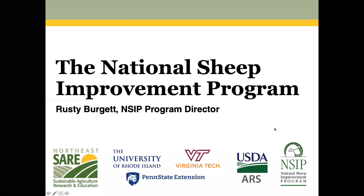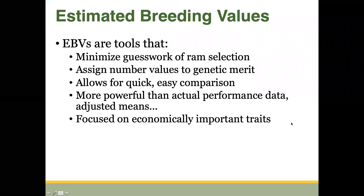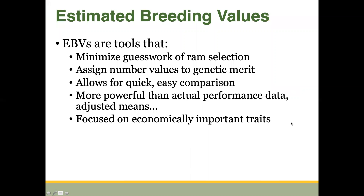The way NSIP helps out the U.S. sheep industry is through these tools called estimated breeding values. Estimated breeding values, or EBVs, are tools that sheep producers can use to minimize guesswork of ram and ewe selection. We minimize that guesswork by assigning a number value to the genetic merit of an animal for a particular trait, and because there's a number value assigned to that genetic merit it allows for quick and easy comparisons.